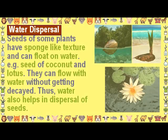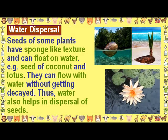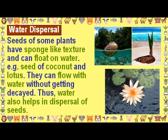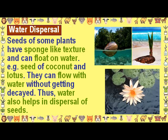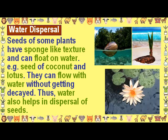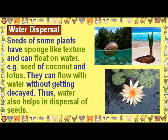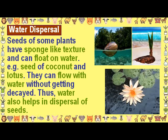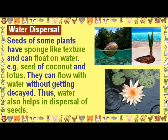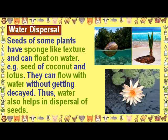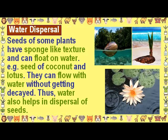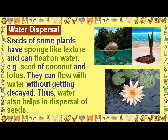Water Dispersal. Seeds of some plants have a sponge-like texture and can float on water. Examples are the seeds of coconut and lotus. They can flow with water without getting decayed. Thus water also helps in the dispersal of seeds.